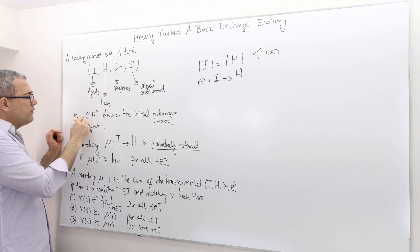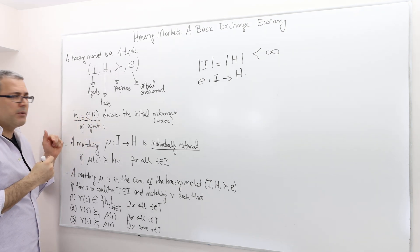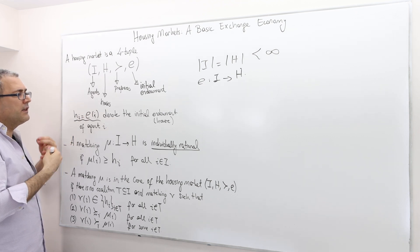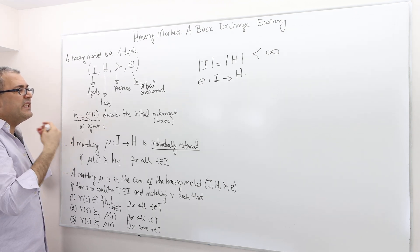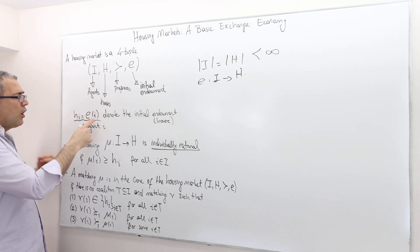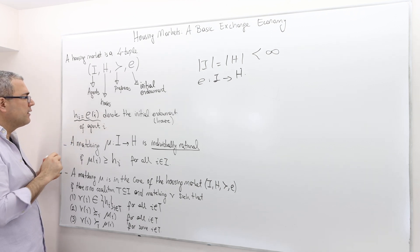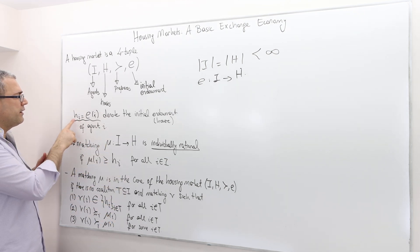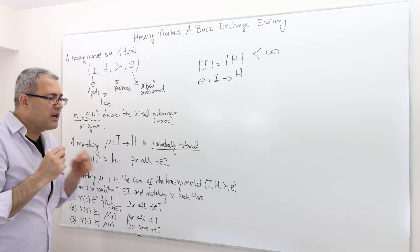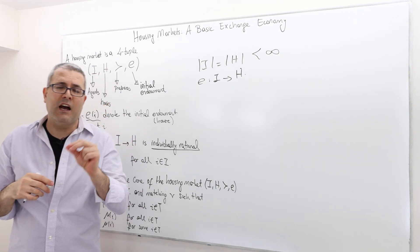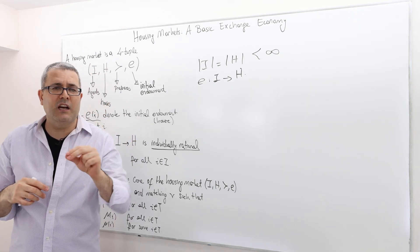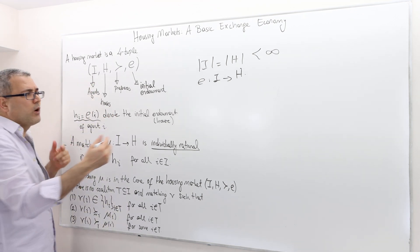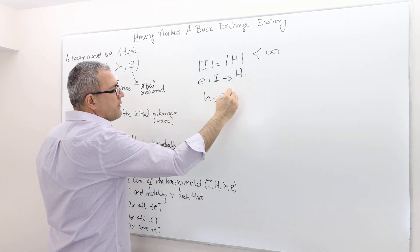I'm going to use the notation H sub i, which is E(i). It denotes the initial endowment — the initial house of agent i. So throughout the rest of the notation, whenever you see H_i, it is nothing but agent i's initial house. H_i is one of those houses — don't forget that.